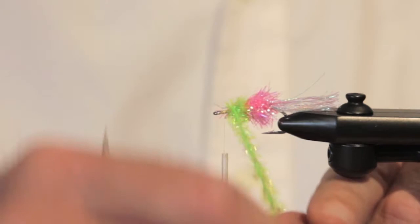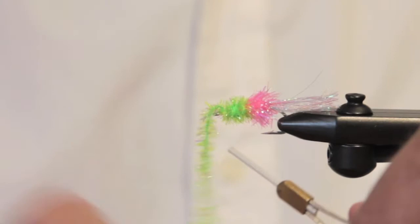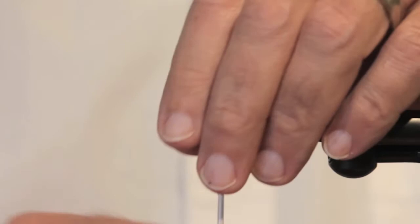I'm just building up a little bit of bulk here on the front of the fly. These are not fished for spooky fish, but the smaller sizes will often be received better than the bigger ones.